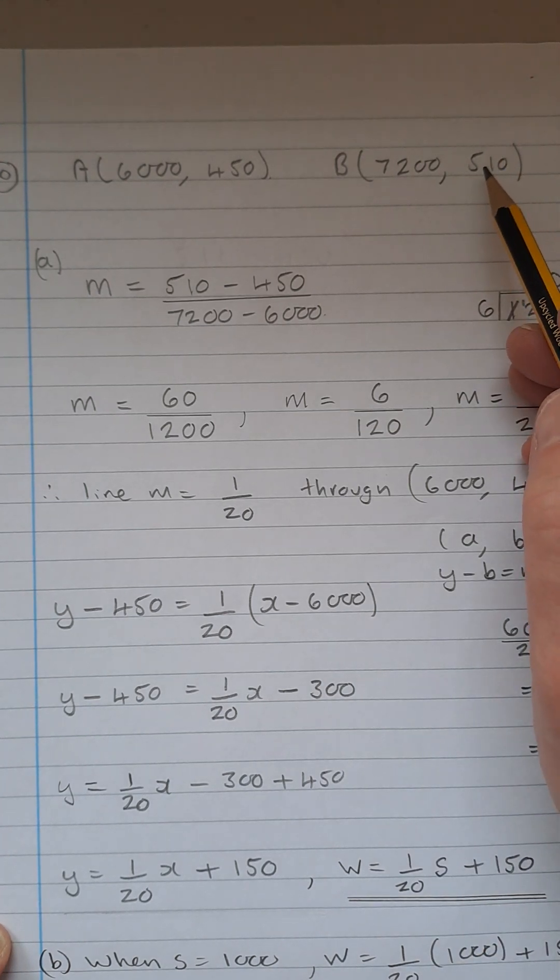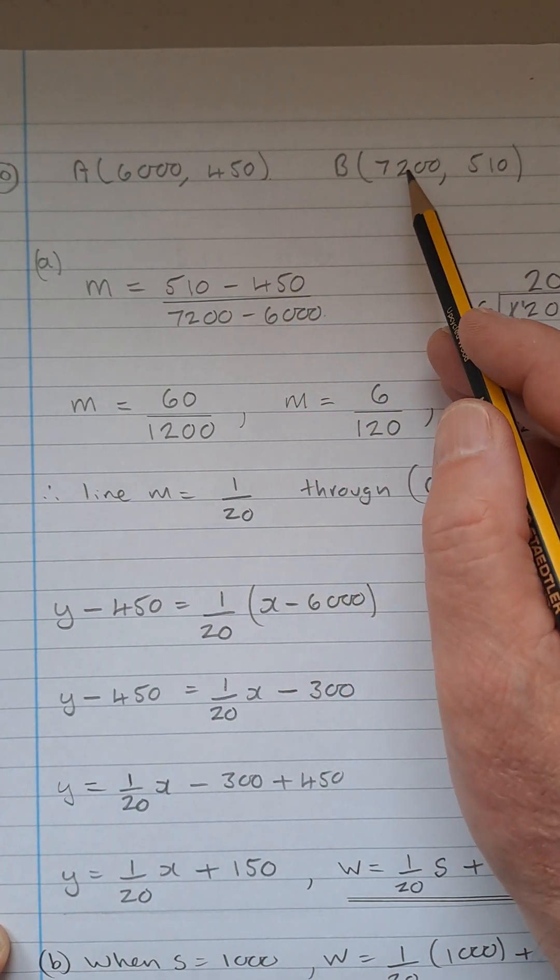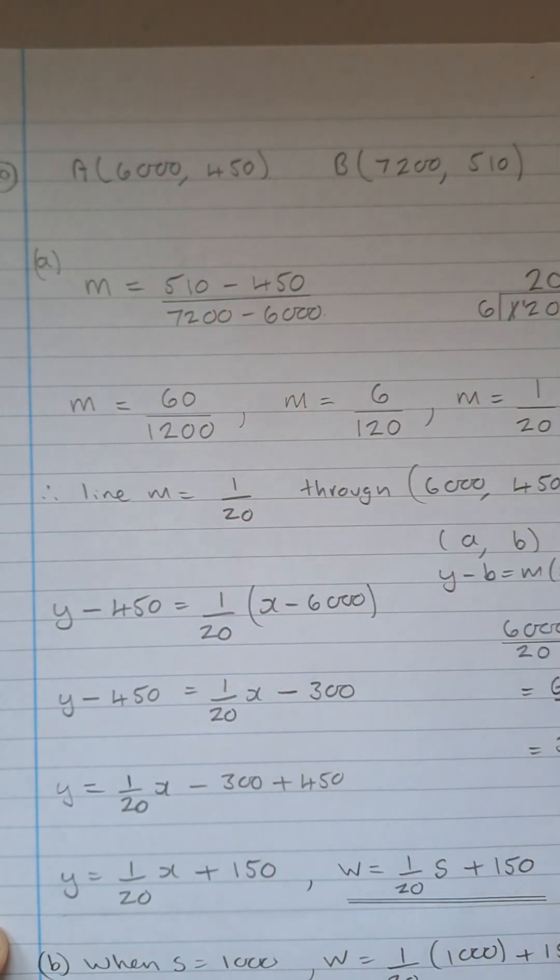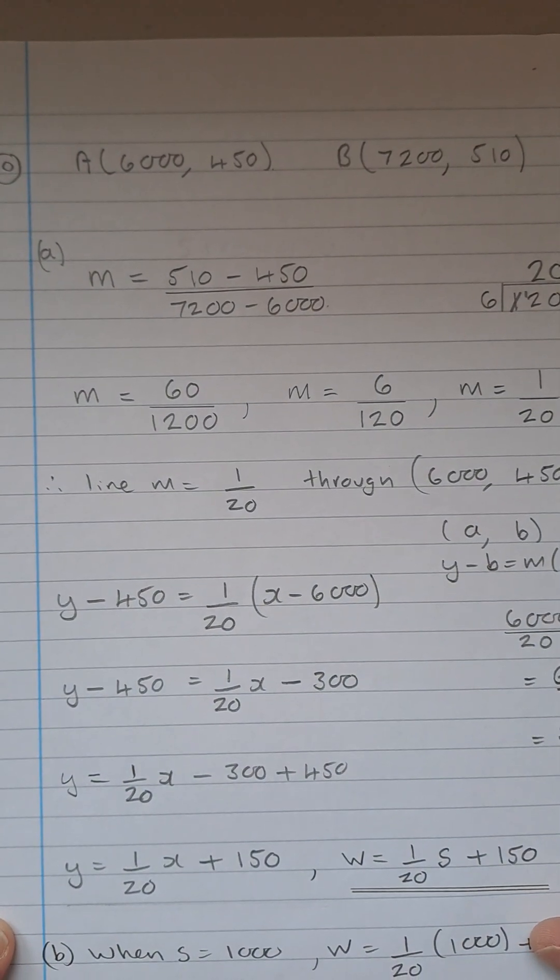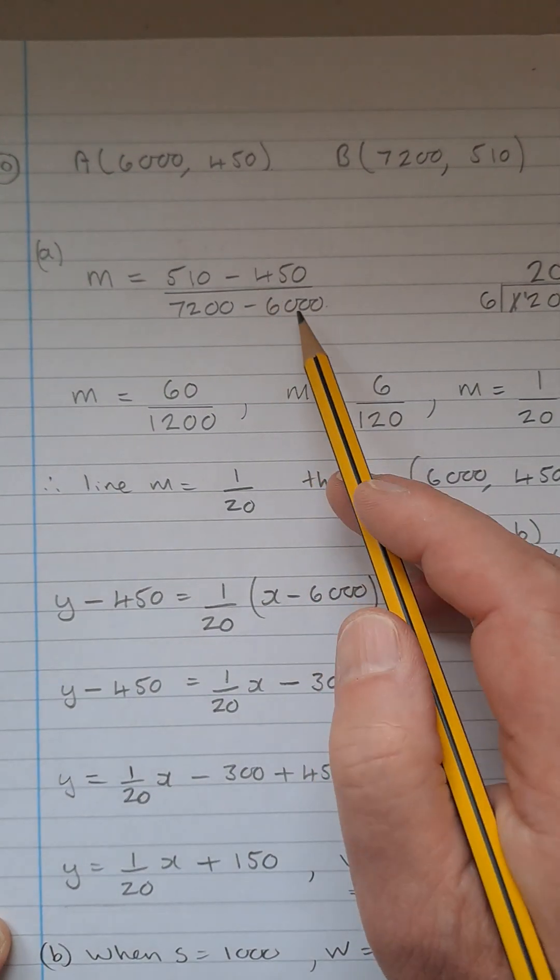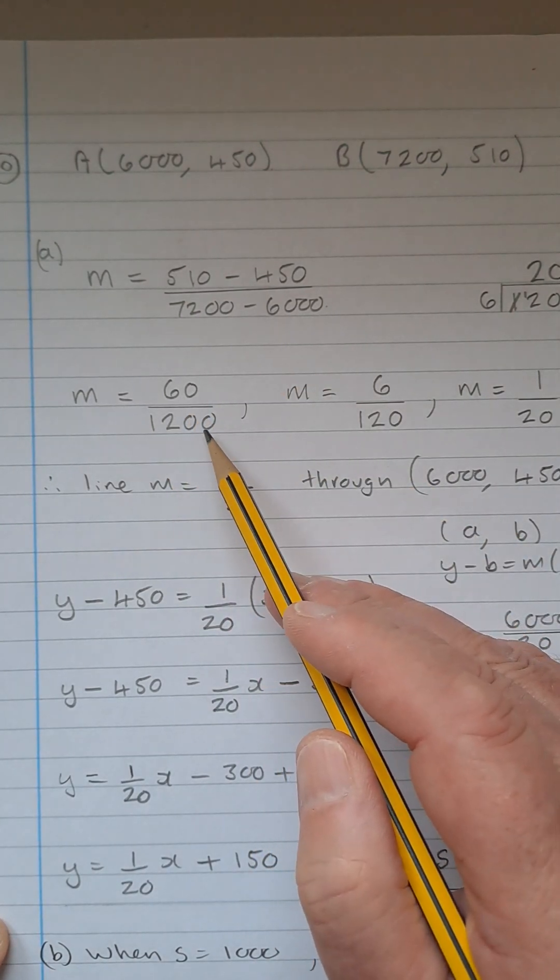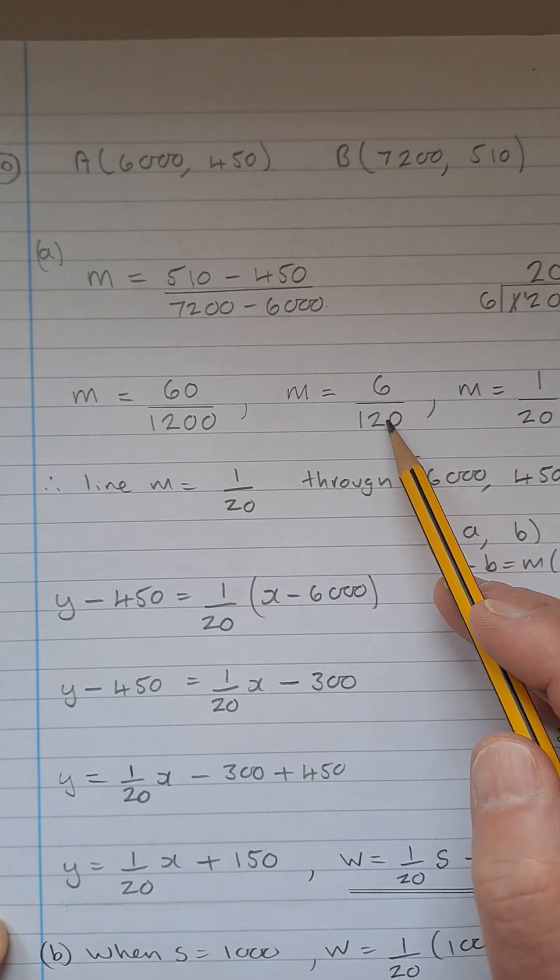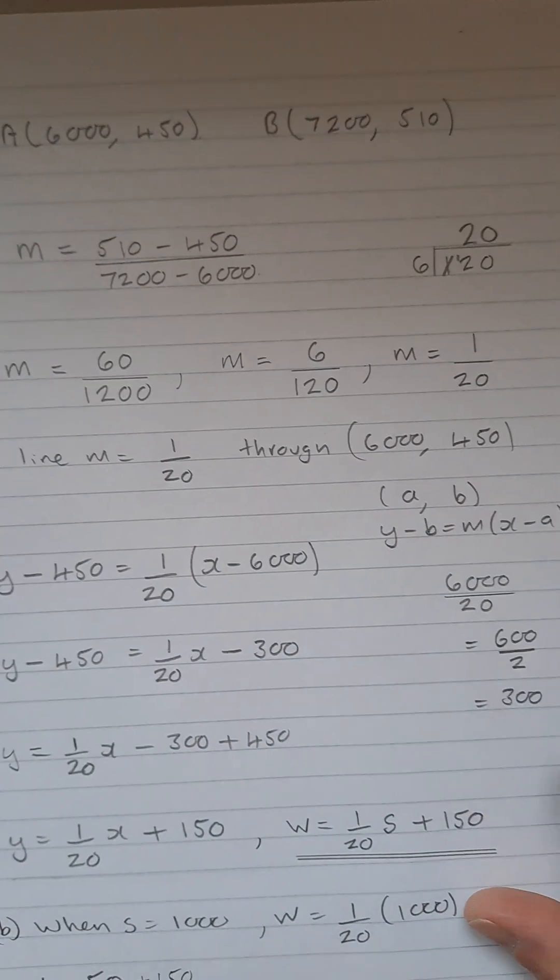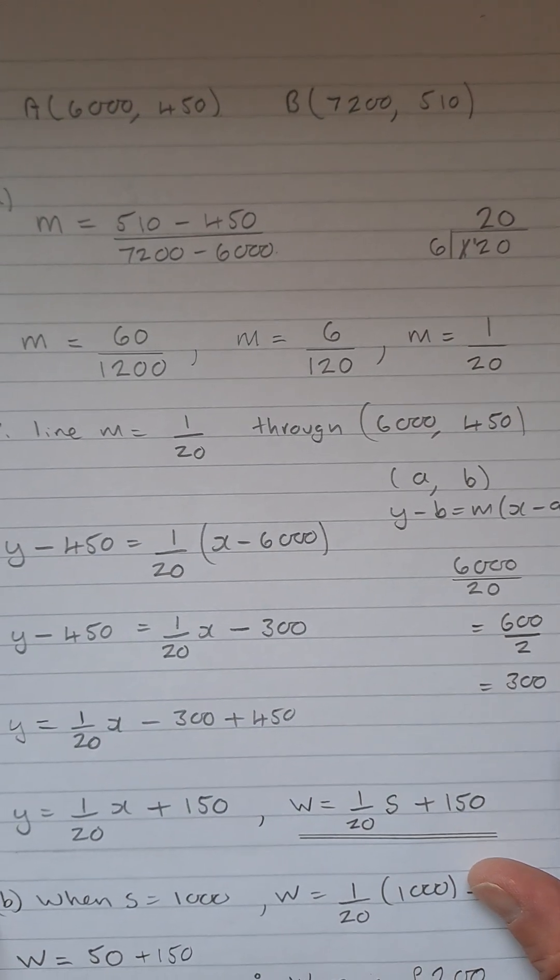So the equation using the gradient first, of course. So the gradient is 510 take 450 over 7,200 take away 6,000. So 510 take away 450 is 60 and 7,200 take away 6,000 gives you 1,200. And we can cancel out the zeros there. That will give you 6 over 120. And divide top and bottom by 6, you get 1 over 20 there. So the gradient of that line is 1 over 20.